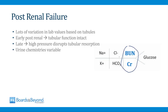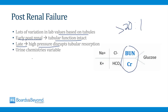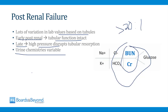In post-renal failure, the BUN and creatinine will rise, but there's lots of variability. Unlike pre-renal failure, the ratio of BUN to creatinine greater than 20 to 1 cannot be relied upon, because there's lots of variation based on what the tubules are doing. Early in post-renal failure, tubular function can be intact, potentially causing a high BUN-to-creatinine ratio. Later, high pressure in the tubules can disrupt reabsorption. The diagnosis of post-renal failure is made through an ultrasound showing hydronephrosis or hydroureter — that's why a renal ultrasound is always part of the workup for renal failure of unknown cause.